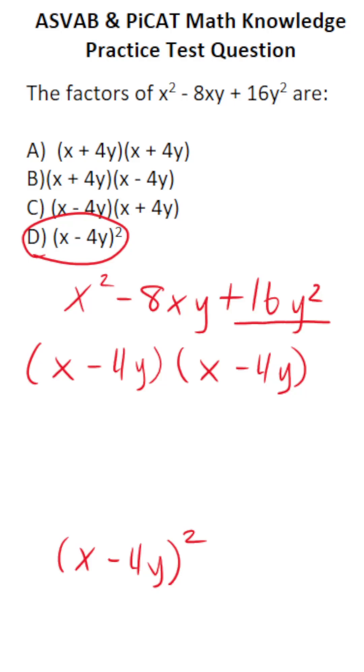That said, let's check our work by quickly multiplying this out using the FOIL method. So let's take x and multiply it here and here. Let's take negative 4y and multiply it here and here. If this matches our original equation, we know we did our factoring correctly.